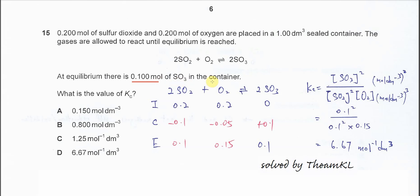You should construct an ICE table: initial, change, and equilibrium. It started with 0.2, 0.2 of the SO2 and O2. SO3 is 0 because initially it's not yet formed.